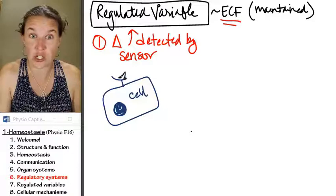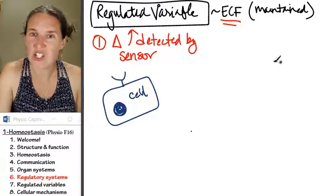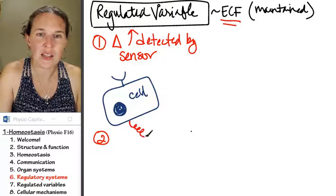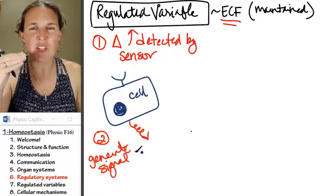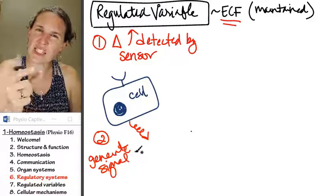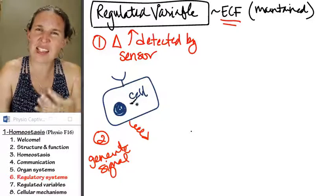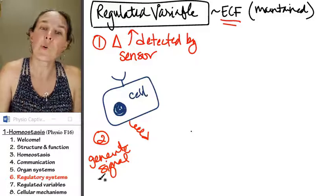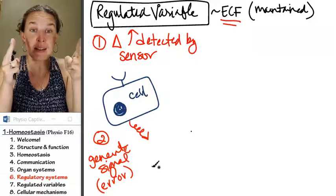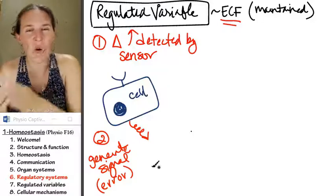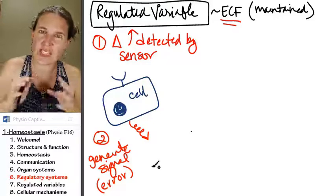The sensor has to then generate some kind of a signal, some sort of communication message, as a result of detecting the change. So change happens, and the sensor has to generate a message. It's often referred to as an error signal because the message isn't going to be sent if you are in a homeostatic range. It's if you go outside of that, if you're going outside of the range, a signal is generated. The sensor sends a message.